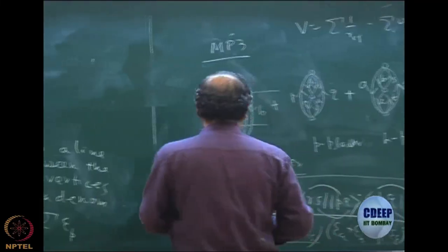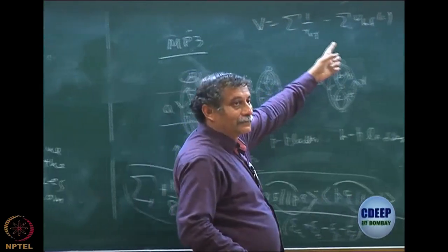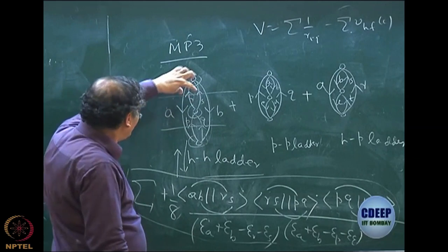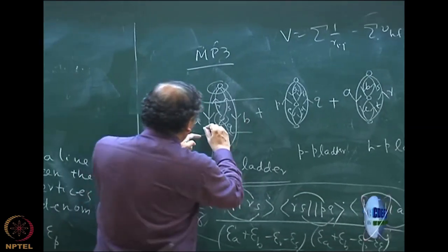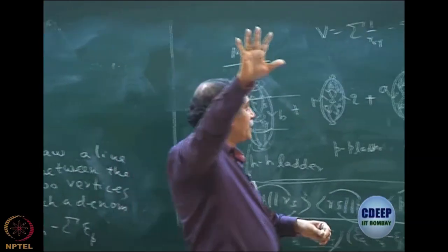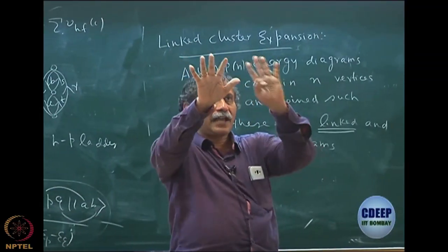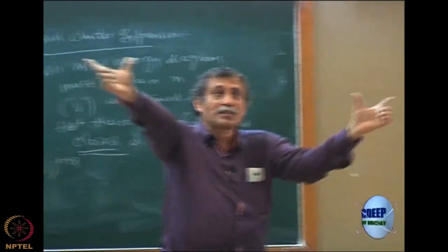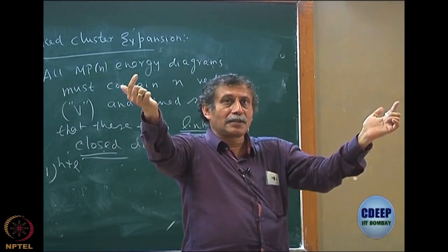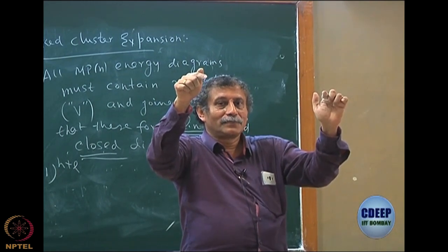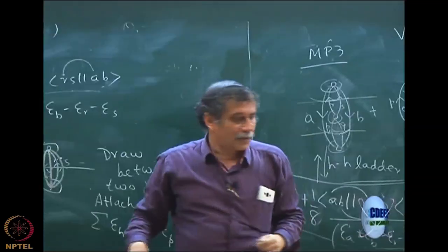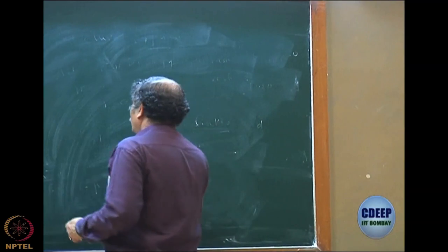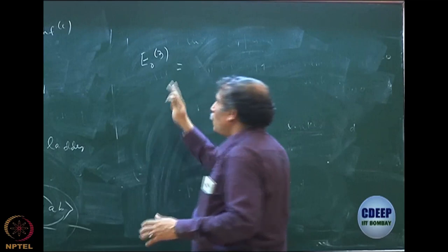If you look at the first-quantized MP3, you will see why there is no V Hartree-Fock in this capital V and what diagrams appear. Because I am going from Hartree-Fock through one V to a doubly excited state, from one doubly excited to another doubly excited, back to Hartree-Fock. So if you look at the MP3 expression: psi_0, V psi_doubles, psi_doubles V psi_doubles, psi_doubles V psi_0. You can see there cannot be singles because of Brillouin's theorem.